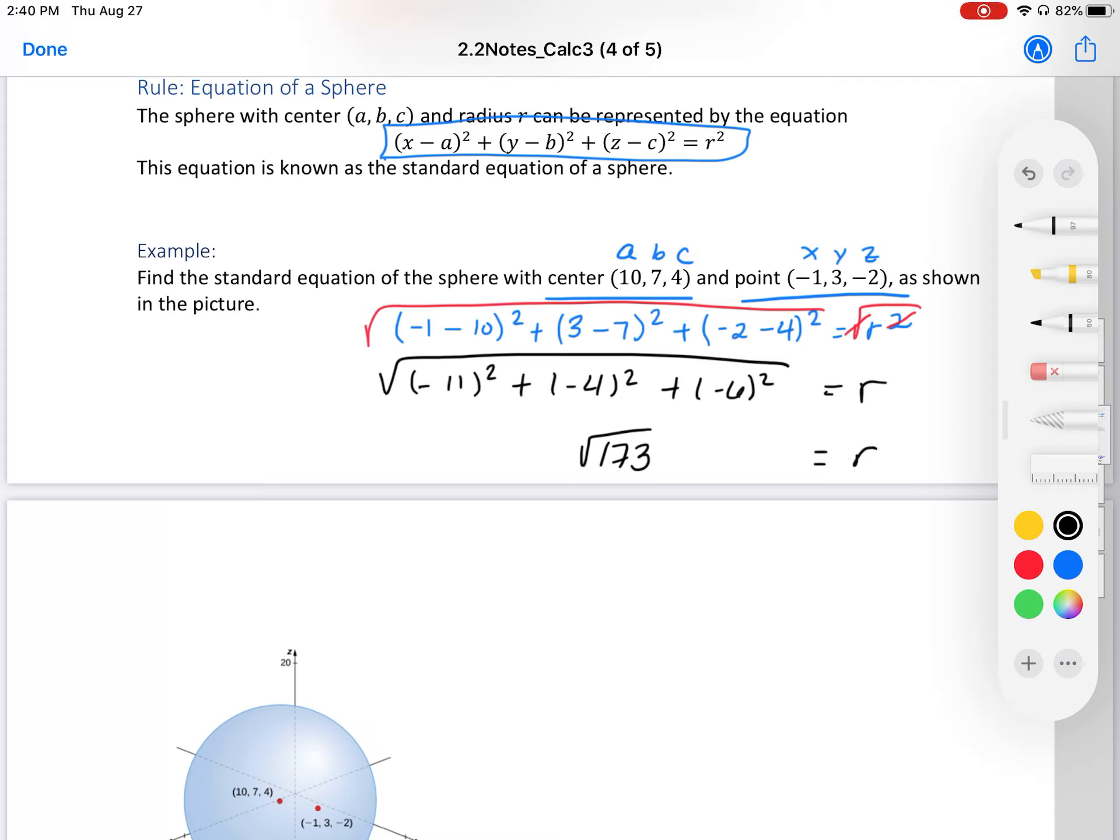Then we want the formula. Now we can use that center. Just like your circle, we have (x - 10)² + (y - 7)² + (z - 4)² = 173, because we want r squared. And that is our equation of a sphere.